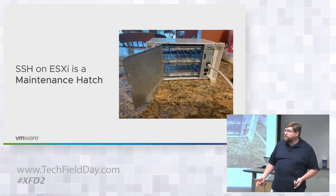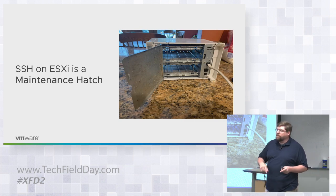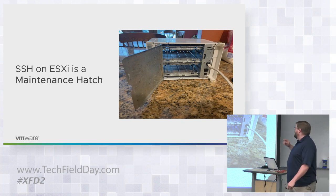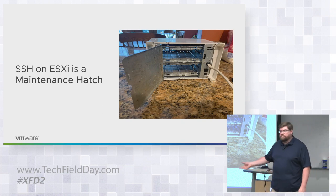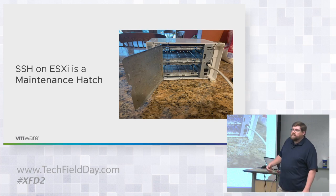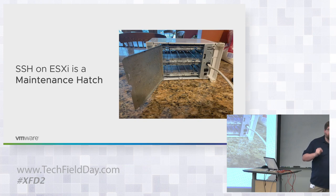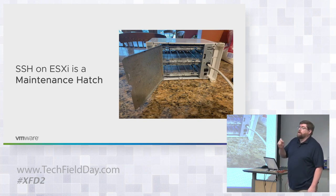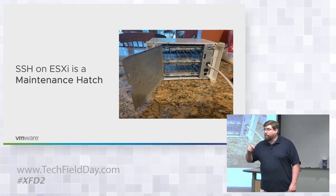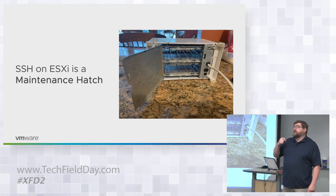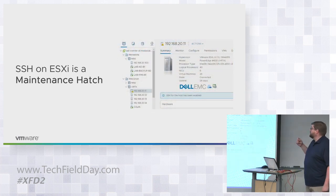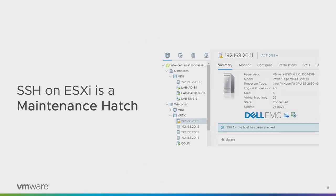Depends on your goals in life — do you like the fire department? The fire department in my little village, they're great, they're volunteer. One of them is a former coworker. If I'd like to see them, maybe, but probably not a good idea. It's the same for SSH. SSH on ESXi is a maintenance hatch — it is there for support. All of the rest of everything should be done through the role-based access control models through vSphere. When you turn on SSH, there are warnings. SSH for the host has been enabled. That's a big warning.